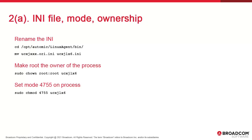We have to configure the agents. First, we rename the agent INI. There's a slight variation here — the INI is called ucxjxxx.ori.ini, which doesn't match the name of the agent process. Make sure you give it the process name with the extension, in other words, ucxjlx6.